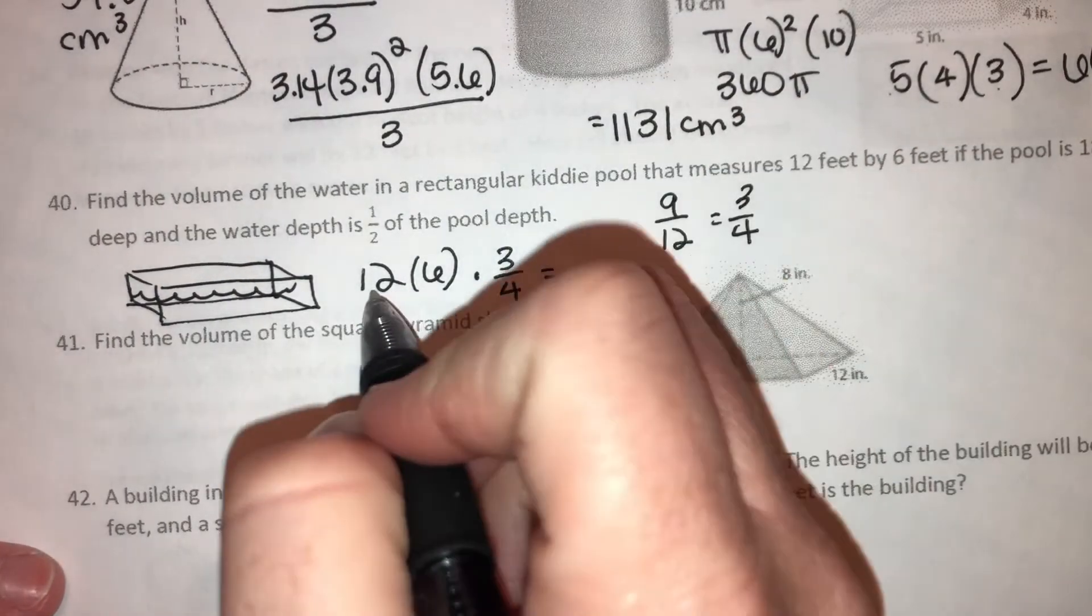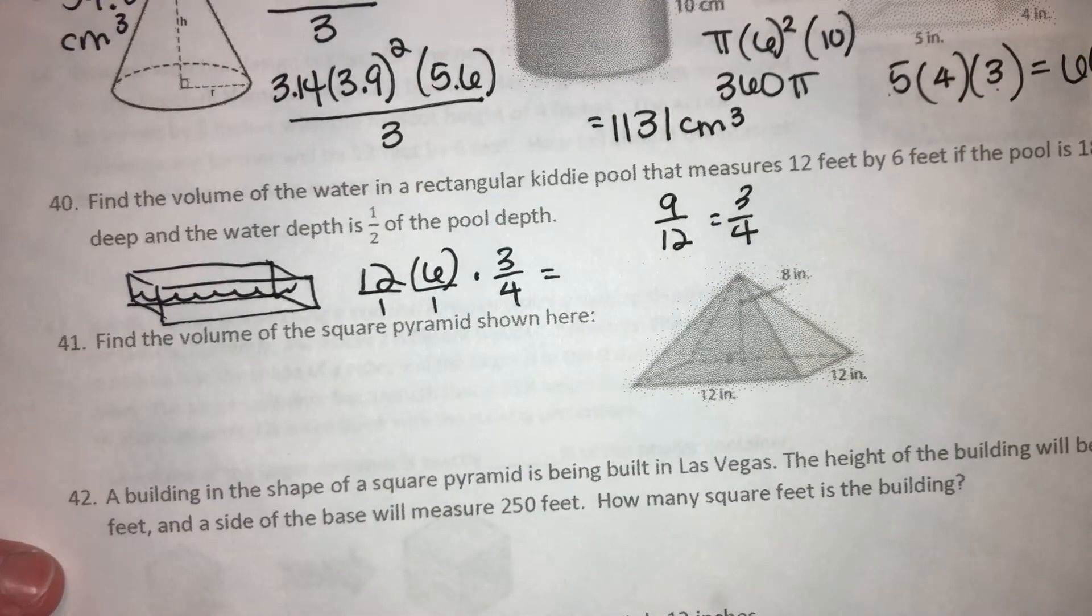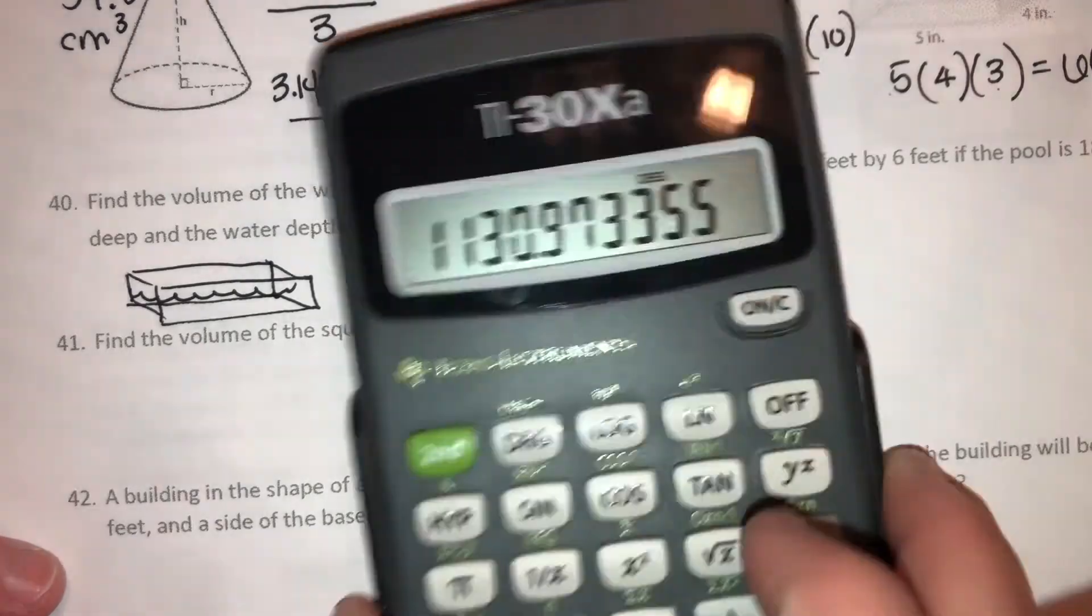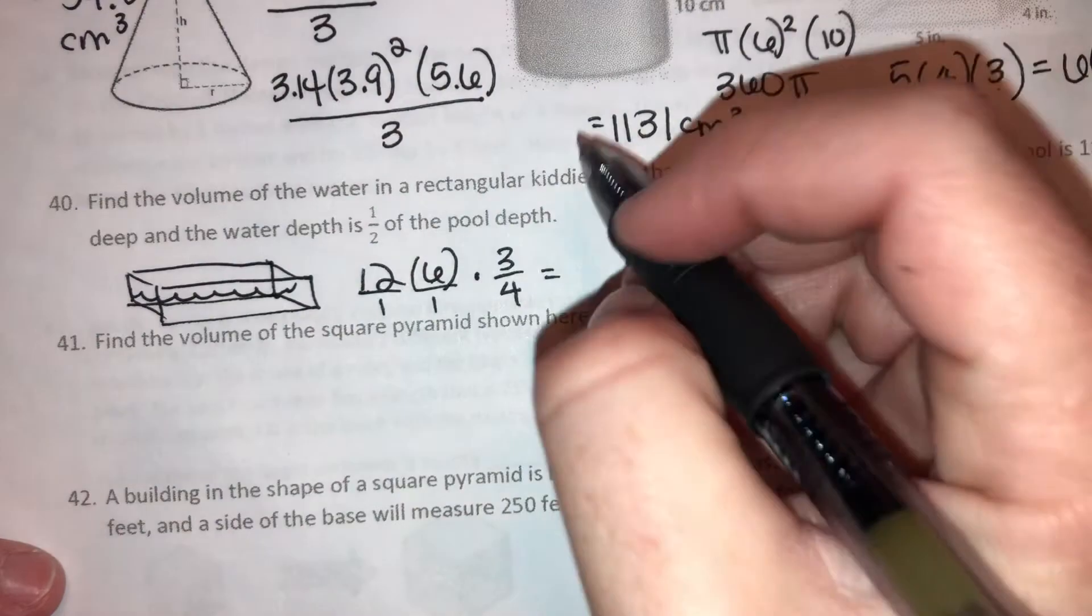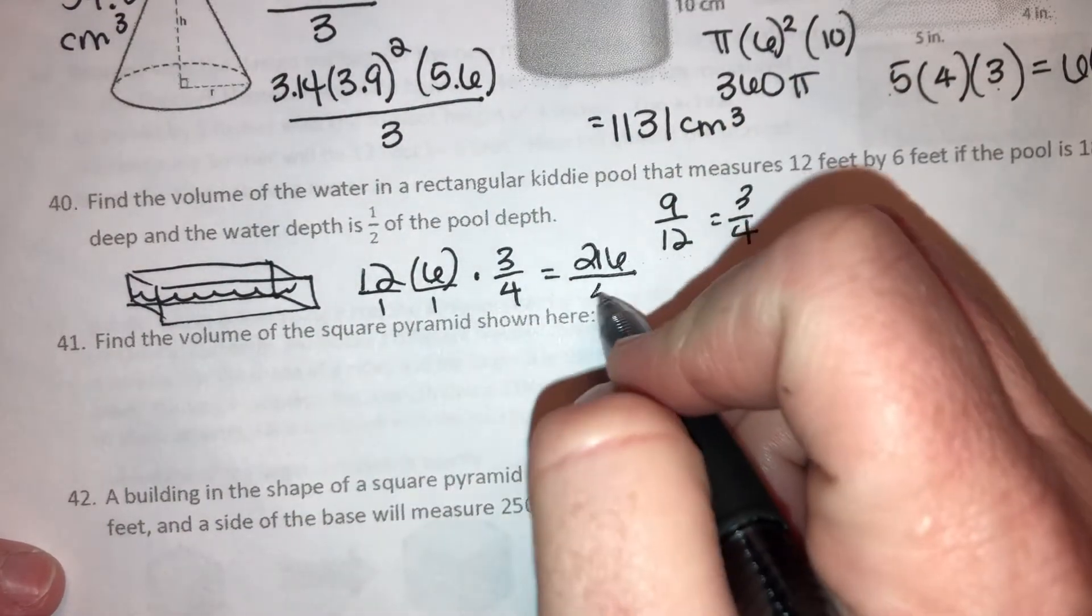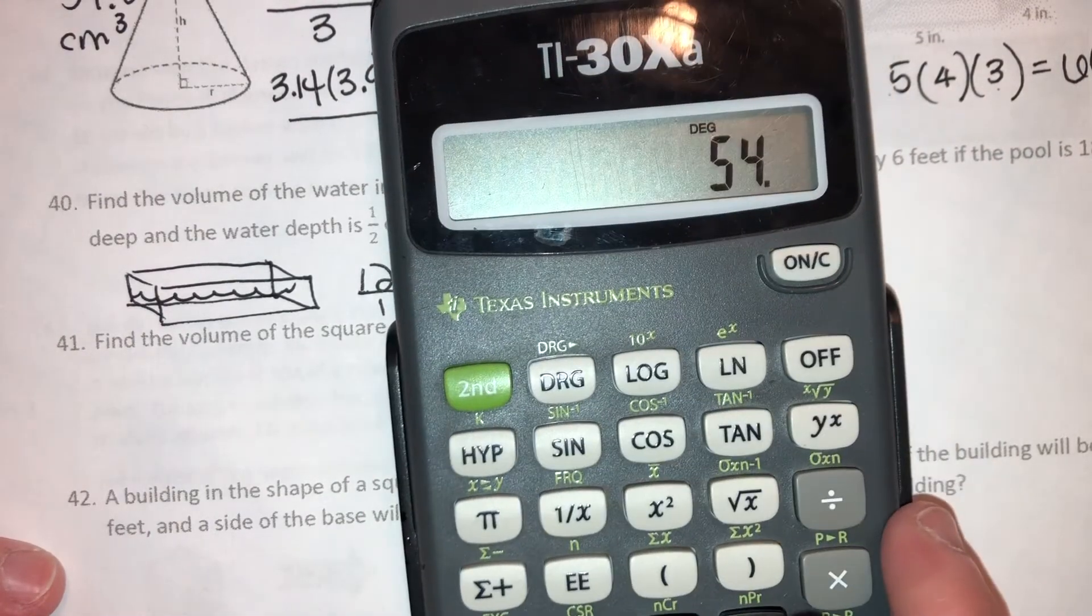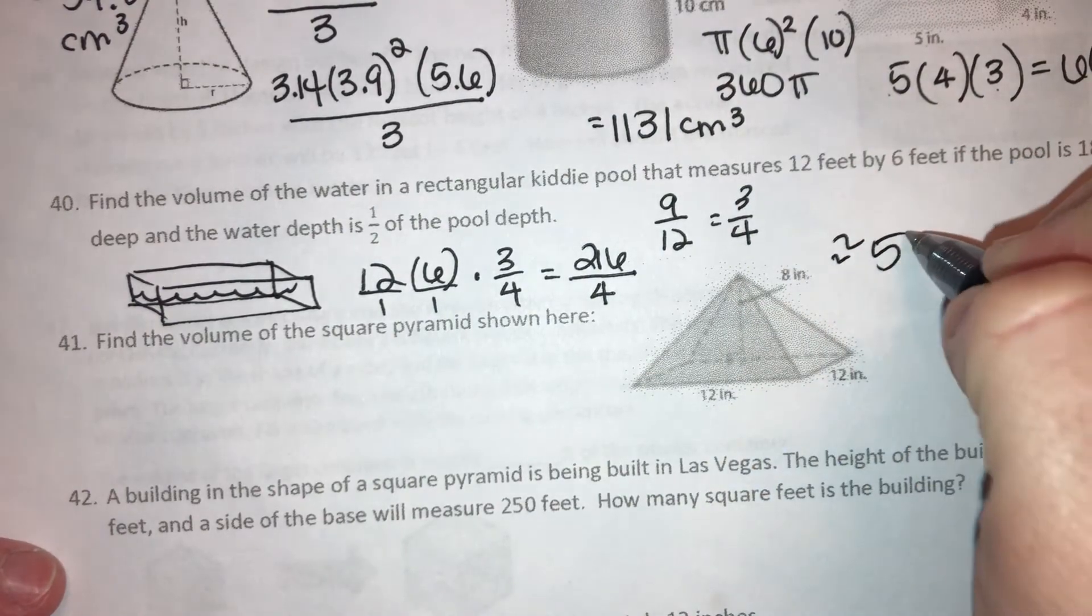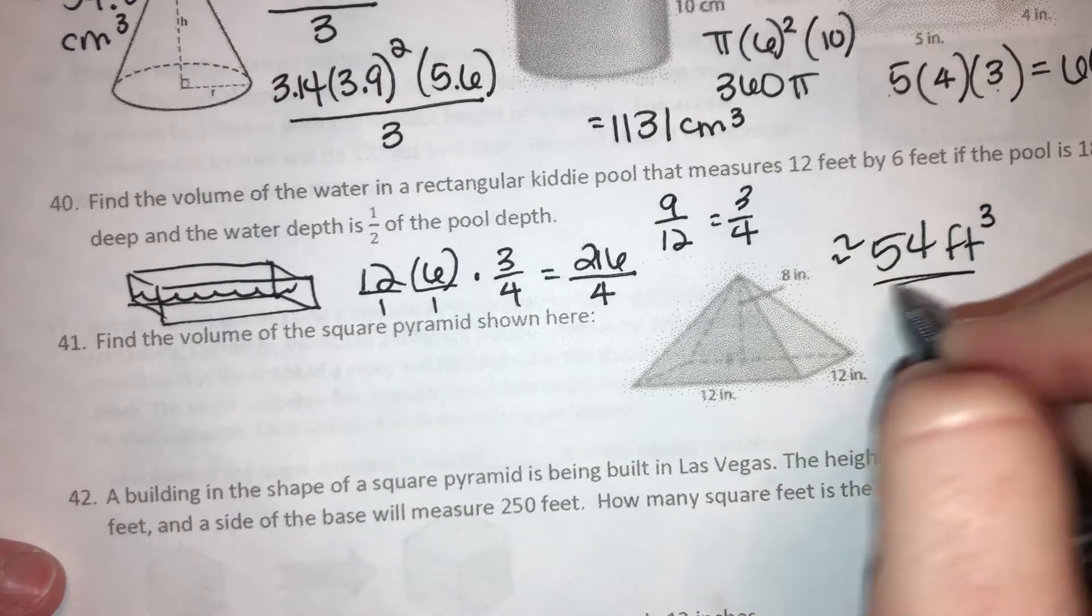So 9 inches out of 12 inches gives us a foot, right? If we simplify that, 9 over 12, we can divide the top and the bottom by 3, and that gives us 3 fourths. So we're gonna multiply this times 3 fourths, right? So if we multiply it all out, this is like saying 12 over 1 times 6 over 1 times 3 over 4.